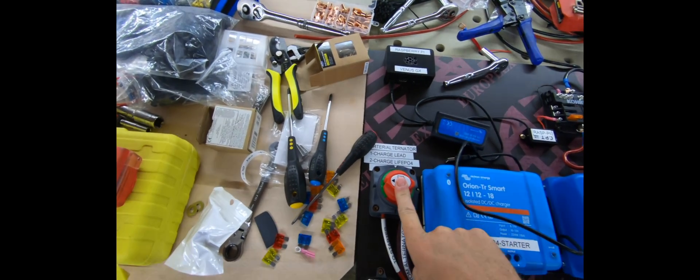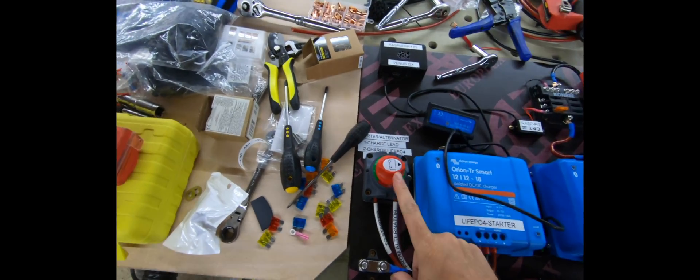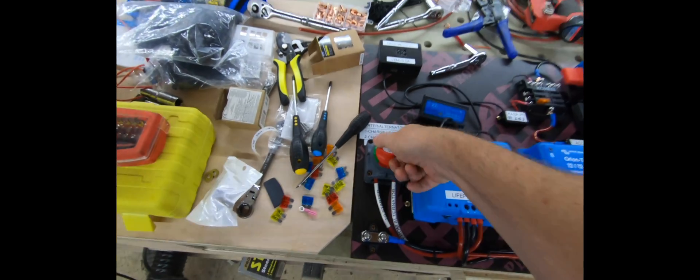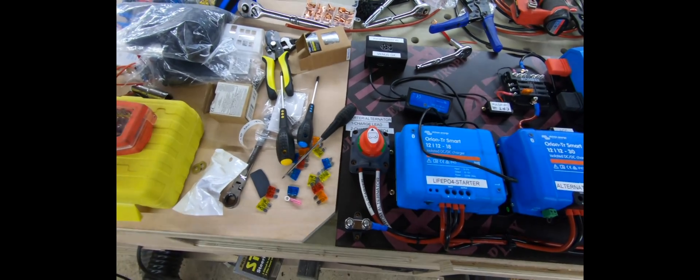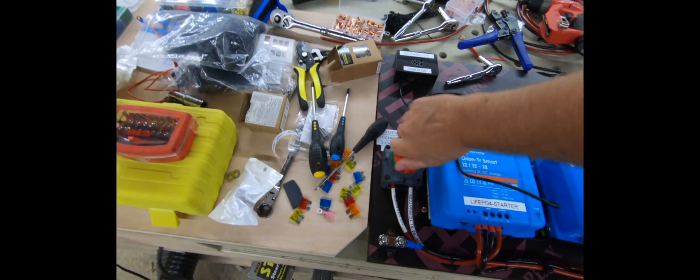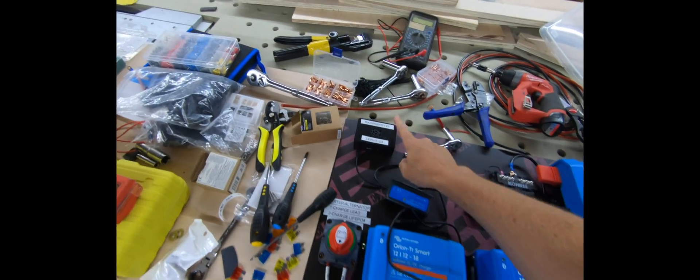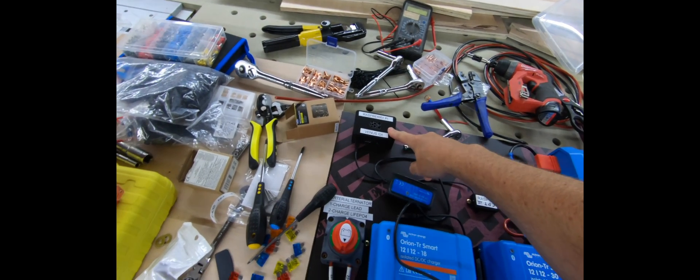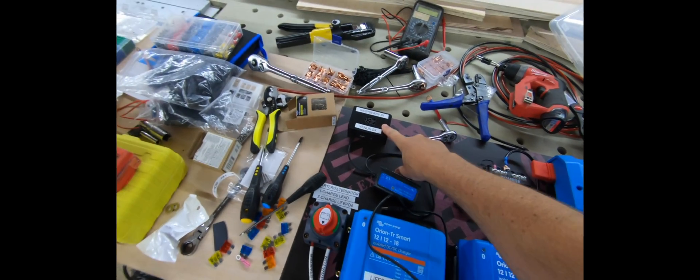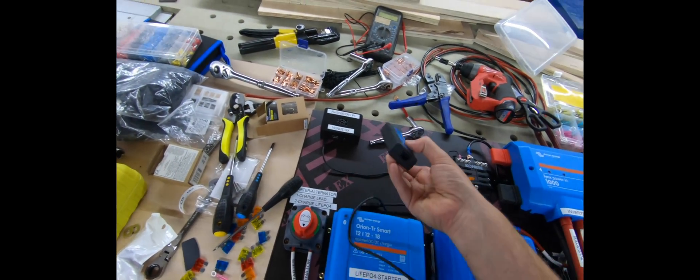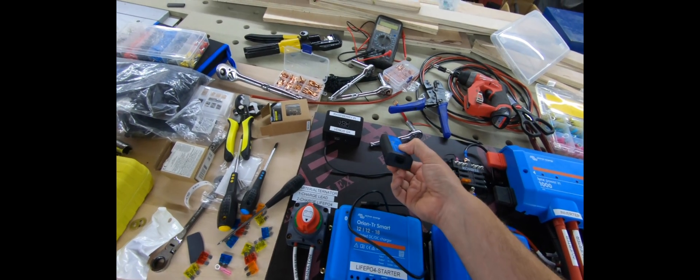So we can isolate. All of this will be controlled through a Raspberry Pi running the Venus GX software from Victron. This will be connecting through to the inverter.